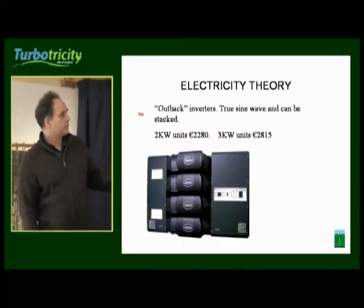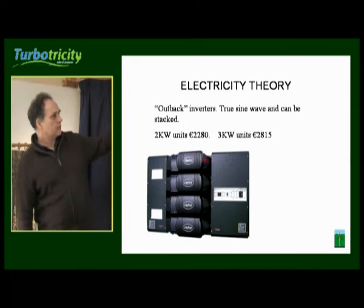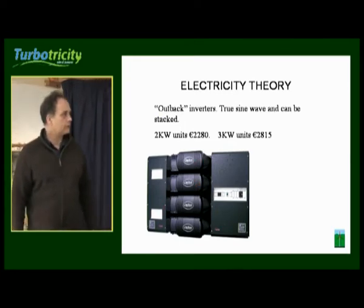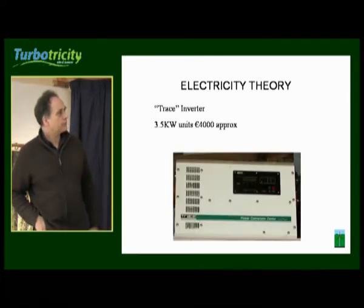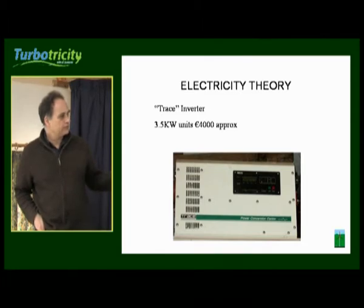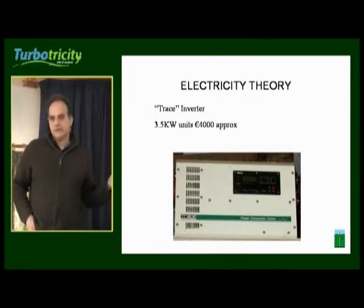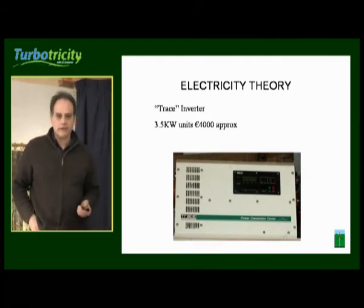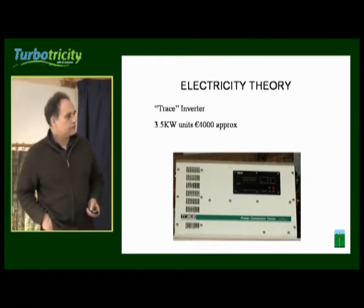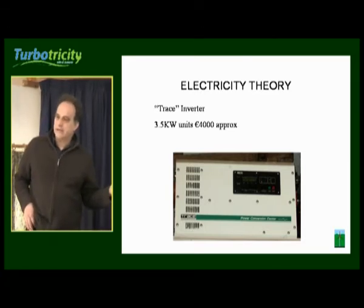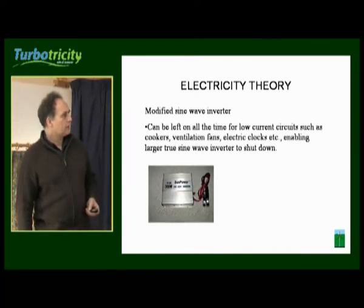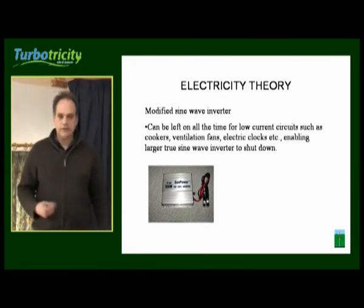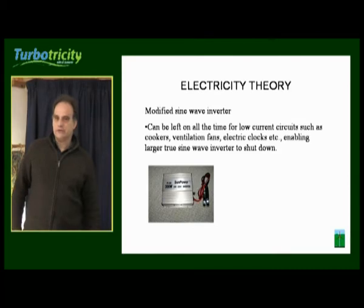This is an Outback inverter — it's 2 kilowatts, they're stackable, you can put two, three, or four together, they come in 2 kilowatt and 3 kilowatt units, and they're quite a good true sine wave inverter. This is the one we have in our house — it's a Trace inverter, able to continuously feed 3.5 kilowatts with a peak of about 4 to 4.5 kilowatts, at about 4,000 euros. This gear is expensive; there's not many people with battery-based systems so prices are high. A typical modified sine wave inverter is what you might leave running continuously on circuits that are on at all times.